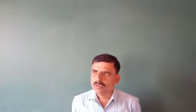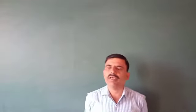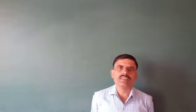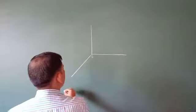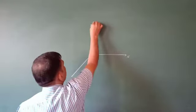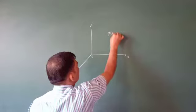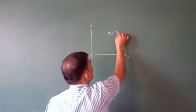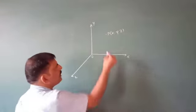Good morning students. From our previous class, we know about three-dimensional geometry. Three-dimensional geometry represents any point in three dimensions with reference to the x-axis, y-axis, and z-axis. Any point is represented as P(x, y, z) in three-dimensional geometry.